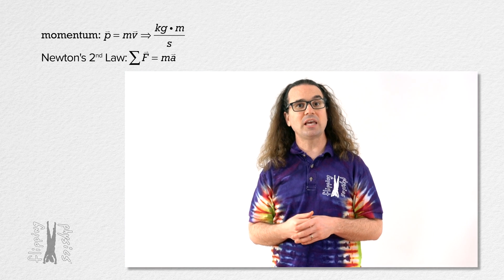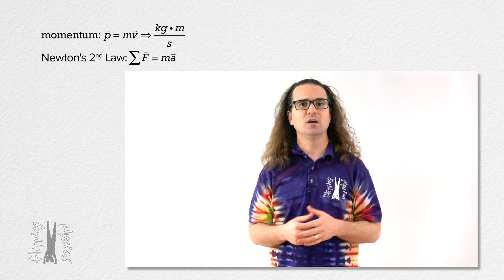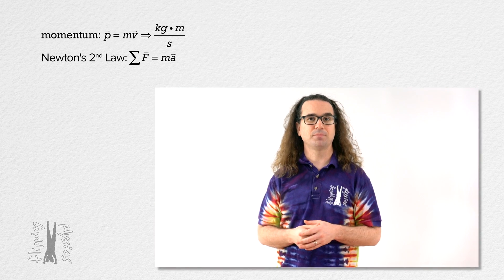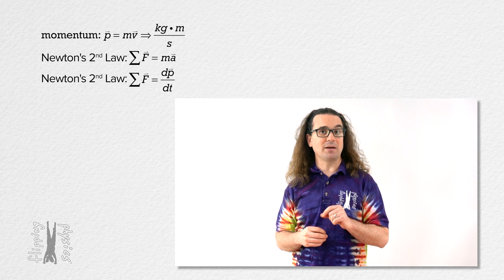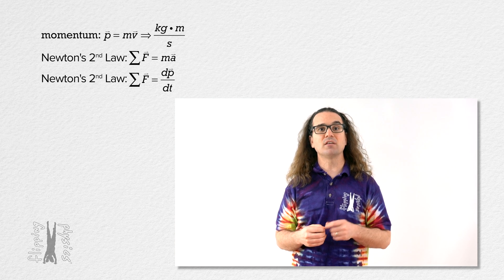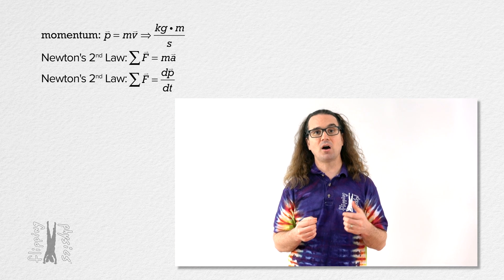And we can now introduce a form of Newton's second law which is closer to the original law, one that involves momentum. The net force acting on an object, or a system of objects, equals the derivative of momentum with respect to time, where both force and momentum are vectors.